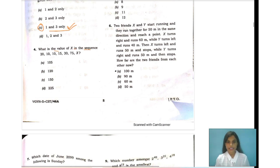Let's move over to number four. They have asked about what is the value of x in the sequence 20, 10, 10, 15, 30, 75, and x. Your answer would be 225, that's number D.